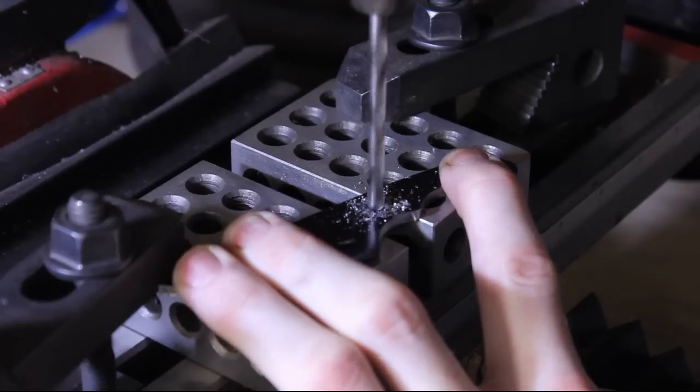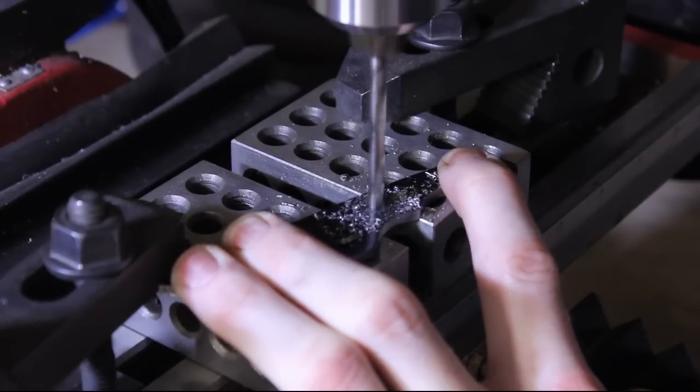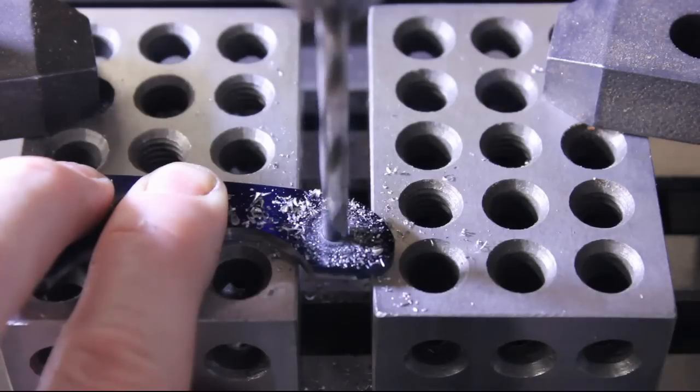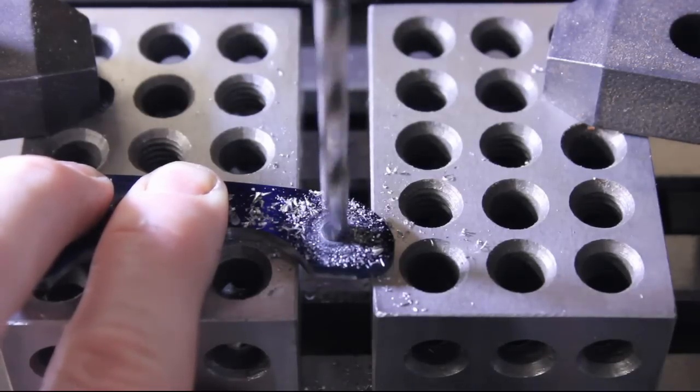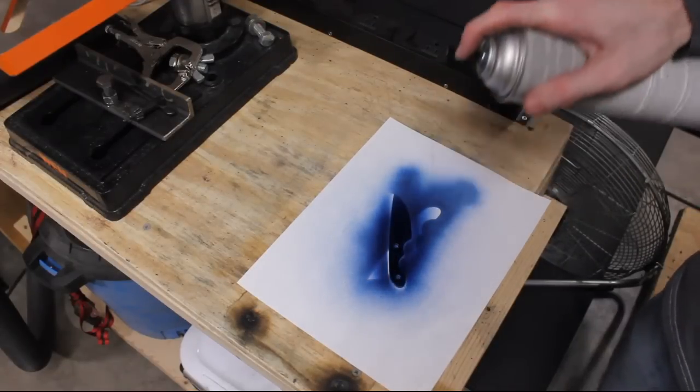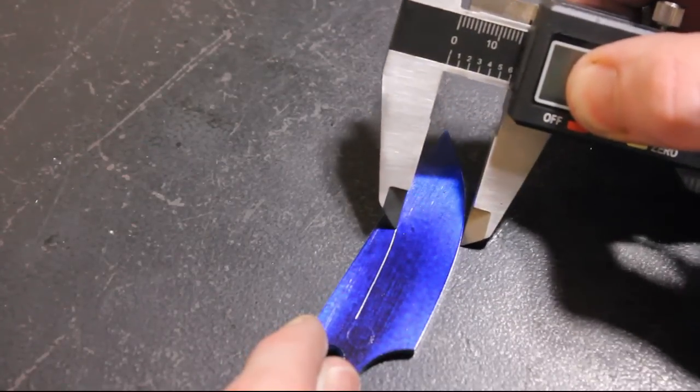Next we'll drill some holes. I'm drilling two number 12 holes for my Corby fasteners. Next we're using some spray-on layout fluid here so that we can scribe on our grind lines for the bevels.